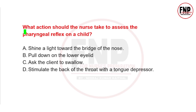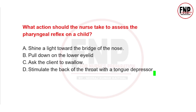Next question: If you need to check the pharyngeal reflex in a child, what would you do? Options: A) Shine a light towards the bridge of the nose, B) Pull down the lower eyelid, C) Ask the client to swallow, D) Stimulate the back of the throat with a tongue depressor.